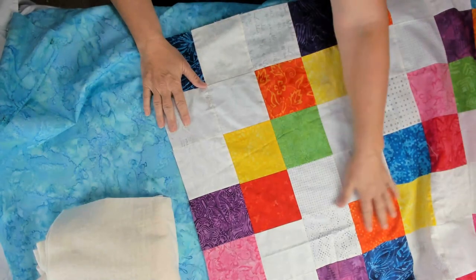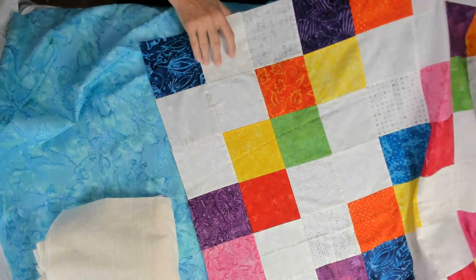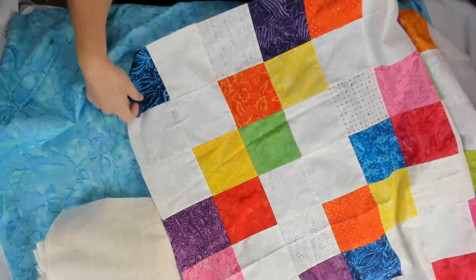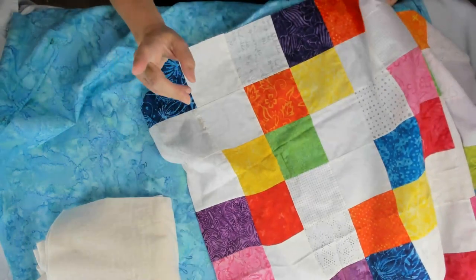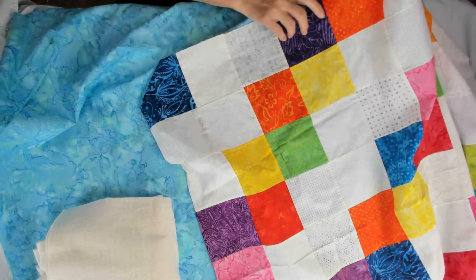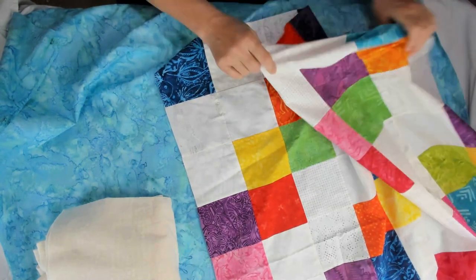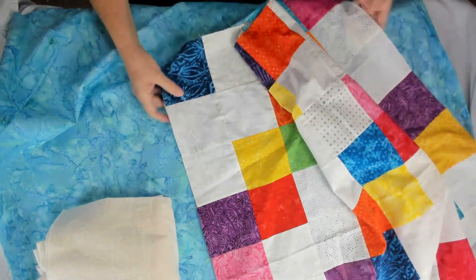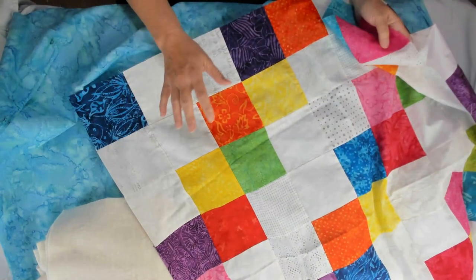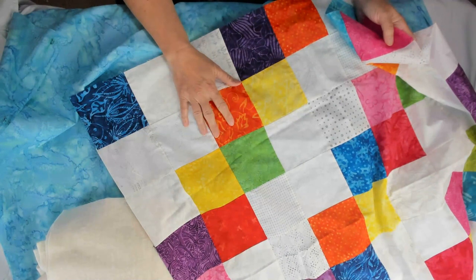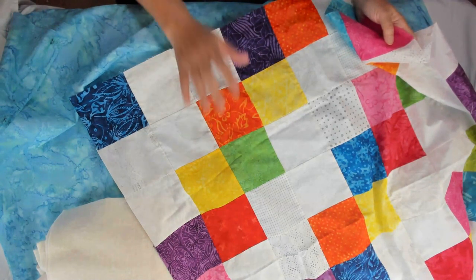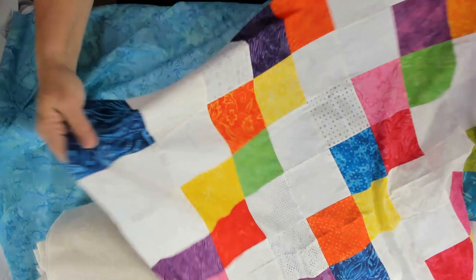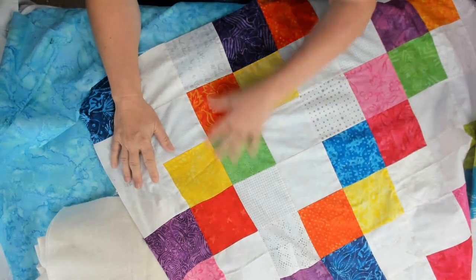You may remember this quilt from a while back. This is my low volume and batik baby quilt. It's a super simple pattern, actually a free pattern. I'll go ahead and link the video up above so that you can go back and take a look at it. I have a pile of unfinished quilt tops and I thought I need to get this done. So before I do this, I want to show you how I baste my quilts. I have my quilt top ready to go. It needs a little pressing because it's been folded up.